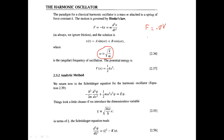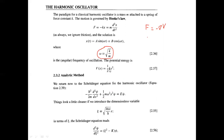We substitute for the potential V — the value from equation 2.37 — and make a substitution where K is written as the square root of m times omega. So K here is nothing but m times omega squared when substituted into the equation.